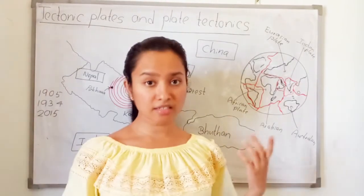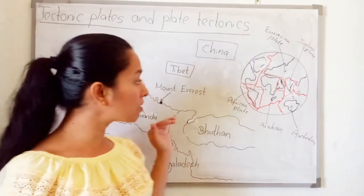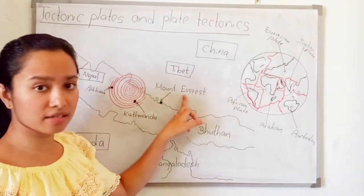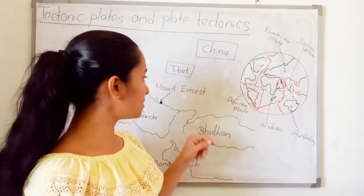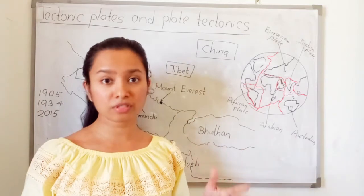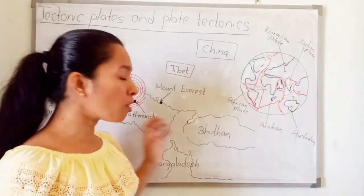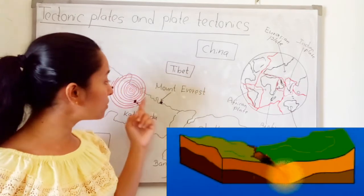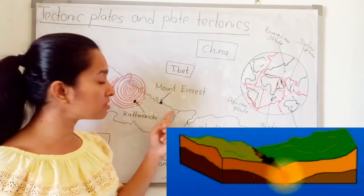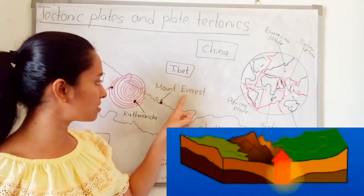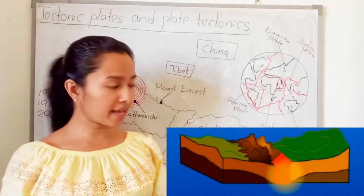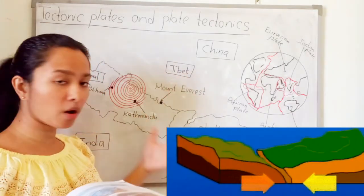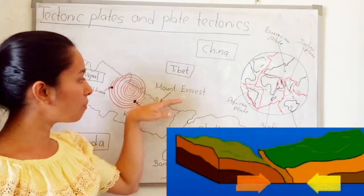Most earthquakes occur at plate margins. Here you can see Mount Everest — it is the highest mountain in our world. Most mountains have occurred because of the movement of these plates, mostly at the margins of tectonic plates. When two land masses move toward each other, the land goes up and mountains are formed.